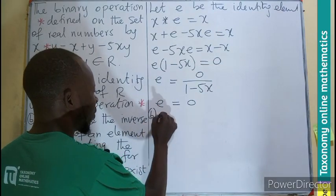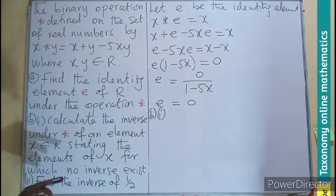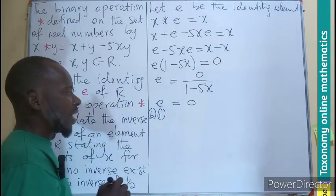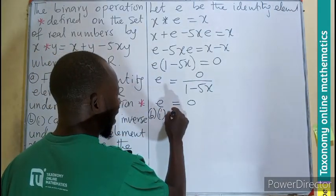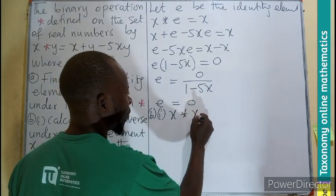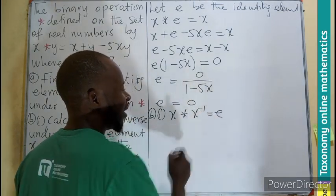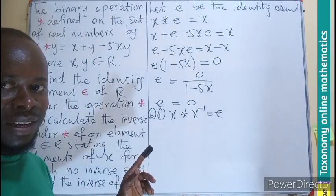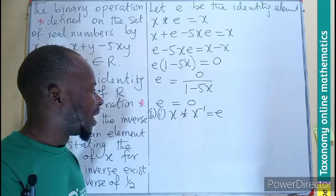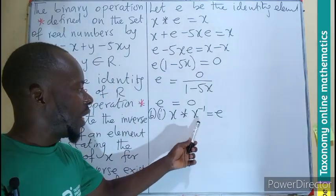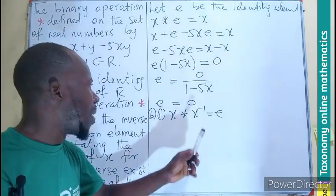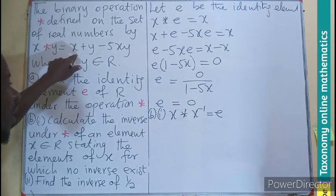Then the second part, we are to find the inverse. So in finding the inverse, we know that x operated on by the inverse must give us the identity element. The concept of this is developed in the previous lesson. So we go back again using the operator definition.